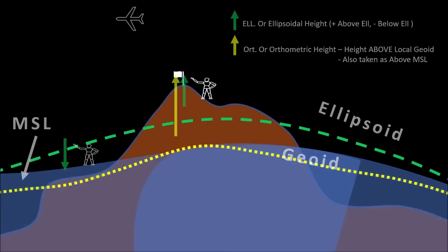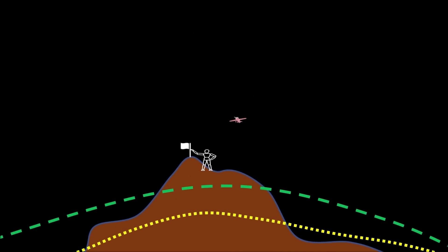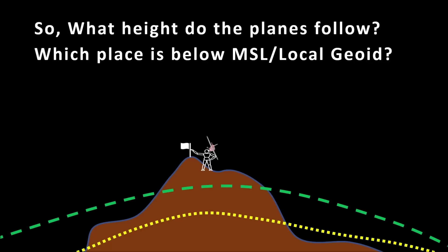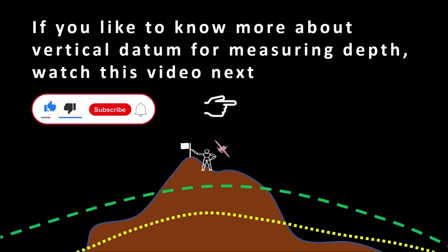So what height do the planes follow, and which place is below mean sea level or the local geoid? If you like to know more about vertical datum for measuring depth, watch this video next. And if you like this small video, please give a thumbs up and subscribe to my channel. I'll see you in the next video.